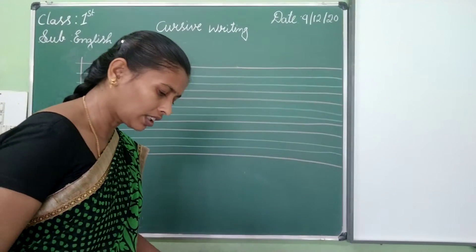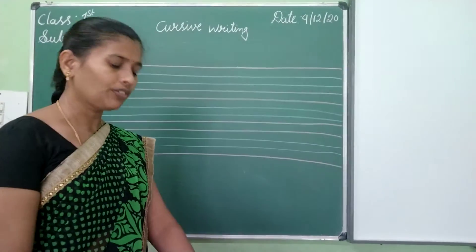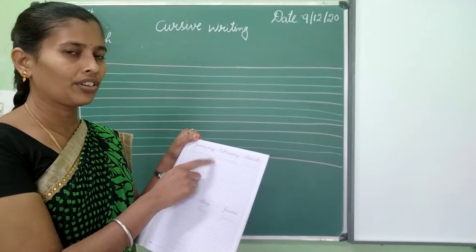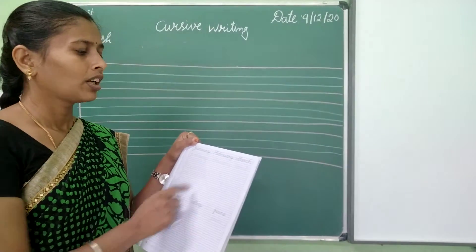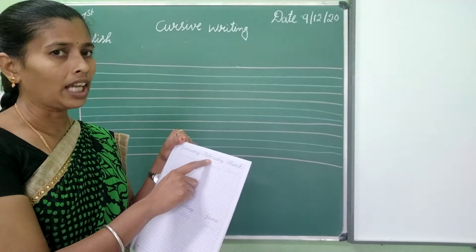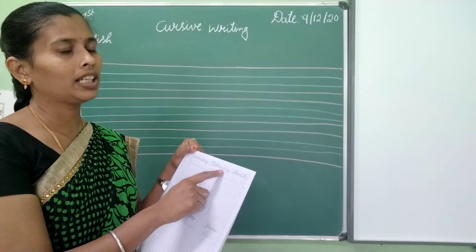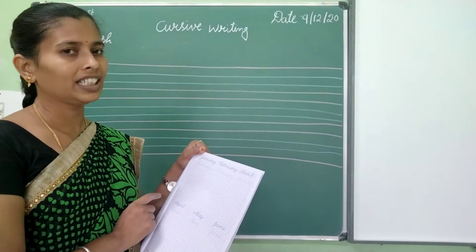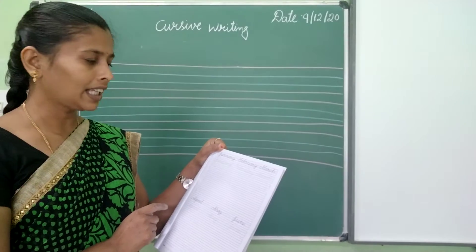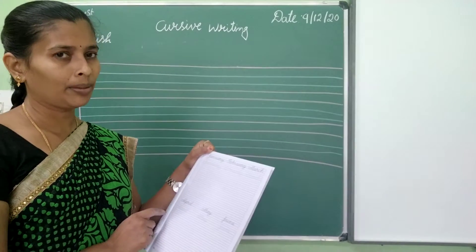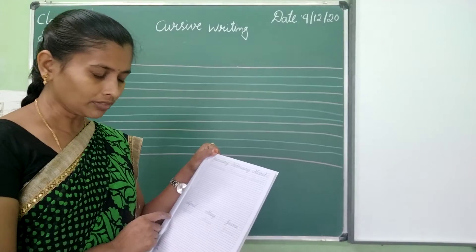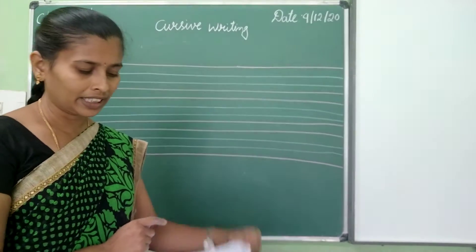First, we will write January. We will practice. J-A-N-U-A-R-Y, January. February, F-E-B-R-U-A-R-Y, February. March, M-A-R-C-H, March. April, A-P-R-I-L, April. May, M-A-Y, May. June, J-U-N-E, June.